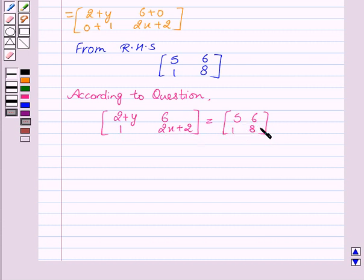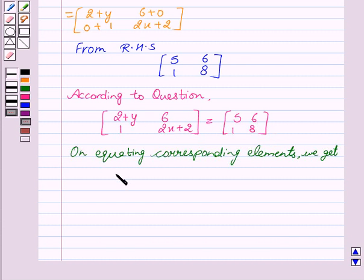Now, on equating the corresponding elements, we get 2+y equal to 5. This is our first equation and 2x+2 equal to 8. This is our second equation.